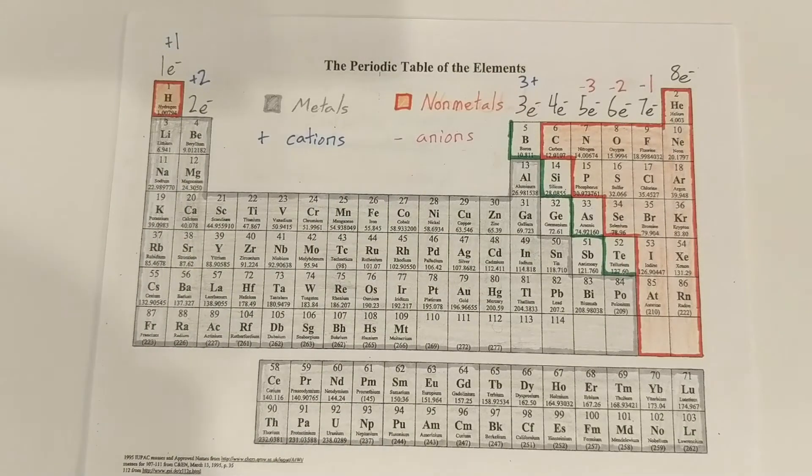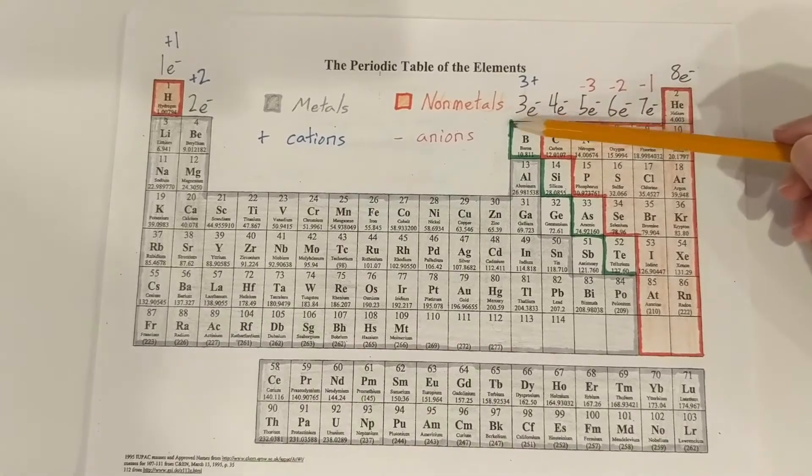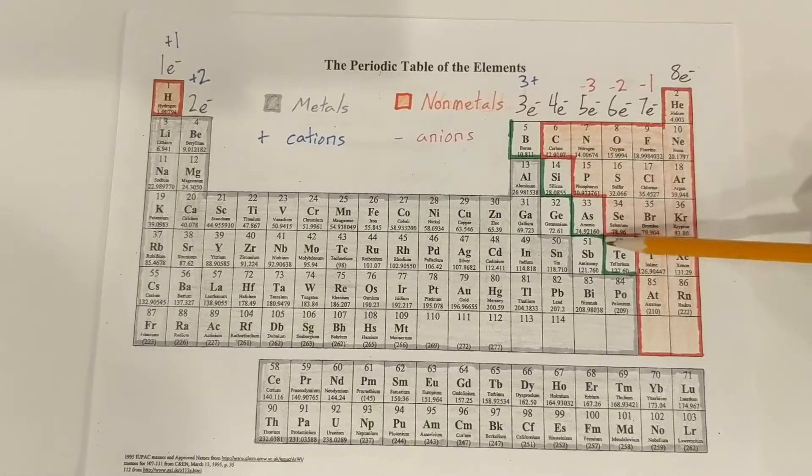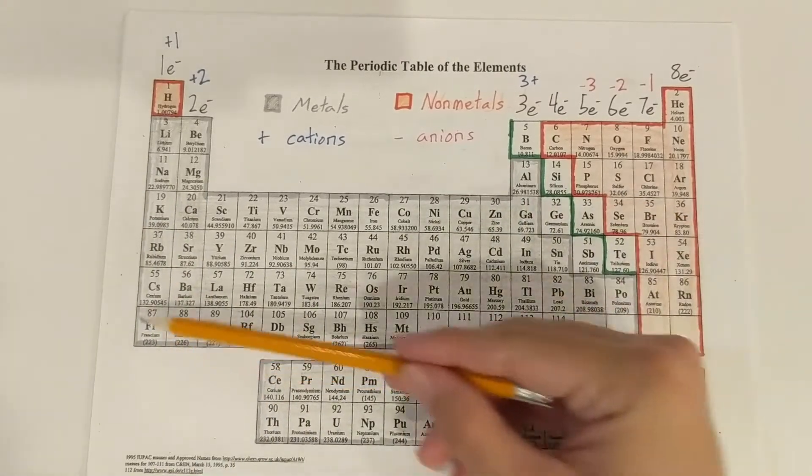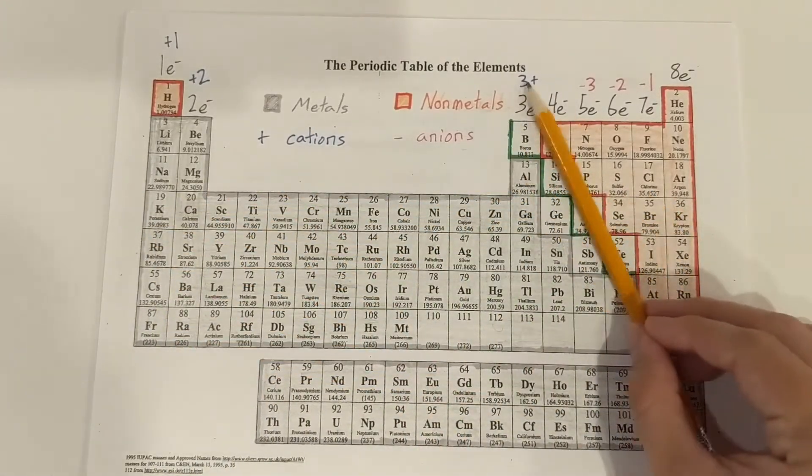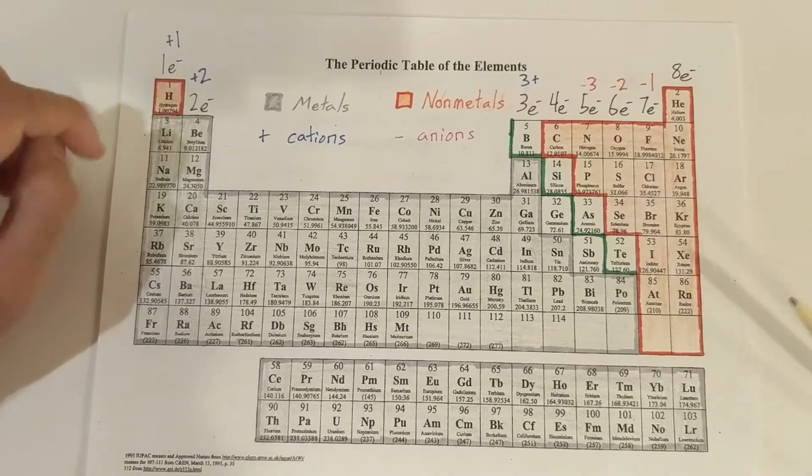So next question is, how can you tell the difference between if an element is a metal or a non-metal? We have the staircase right here. And on the left side, everything in silver right here would be a metal. And what you have to remember is on the right side, everything in orange here is a non-metal. And that's going to include hydrogen too.